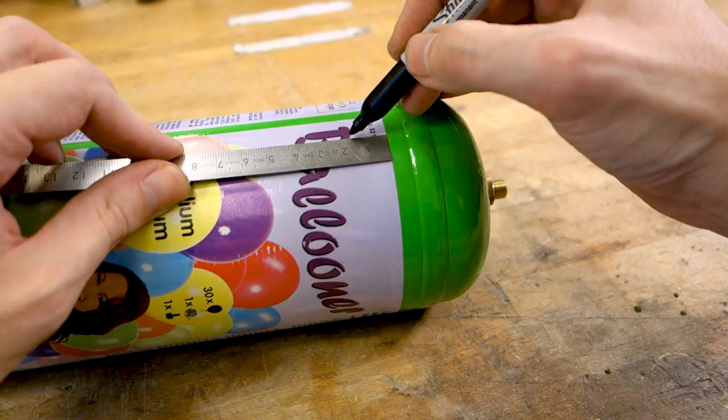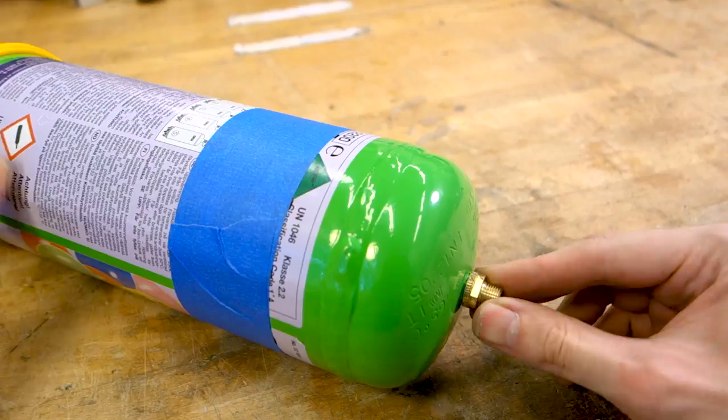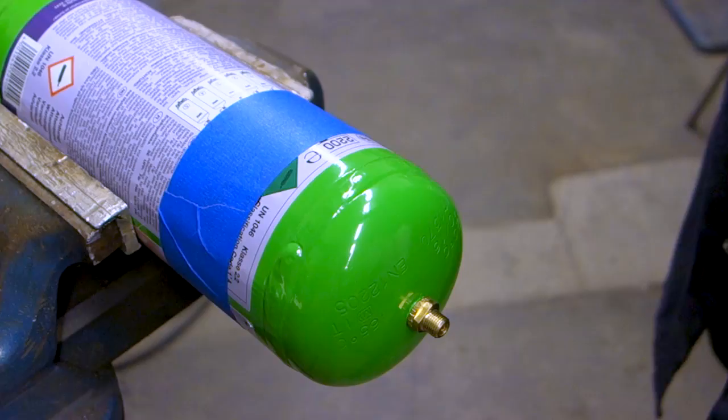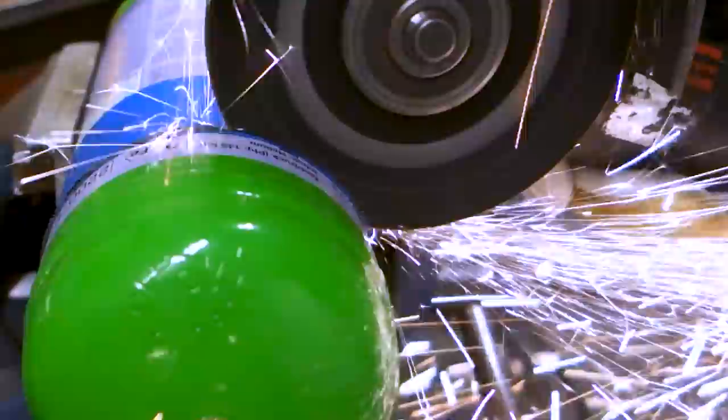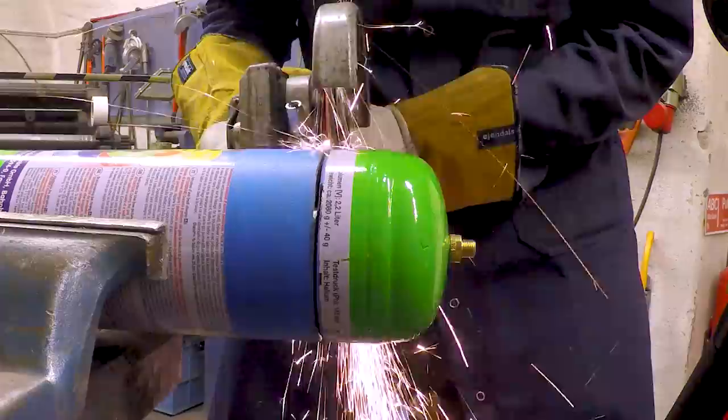Once you've made sure there is no gas in the cylinder, mark where you want to cut off the top. Wide masking tape makes an easy way to get an even mark all around the cylinder. If you've done the previous steps correctly, you should not experience any explosion as you break out the angle grinder.